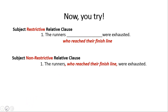I can also say the same thing with a different meaning using a non-restrictive clause: 'The runners, who reached their finish line, were exhausted.' Here, I offset the clause with commas and mean the runners were exhausted — and by the way, they reached their finish line. So reaching the finish line is not essential information in this case — it's just extra detail.